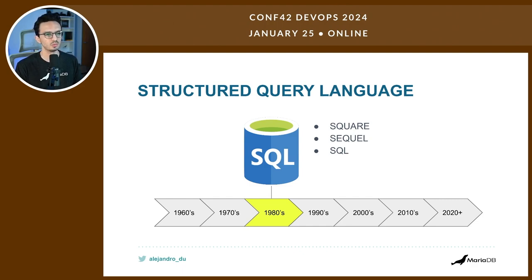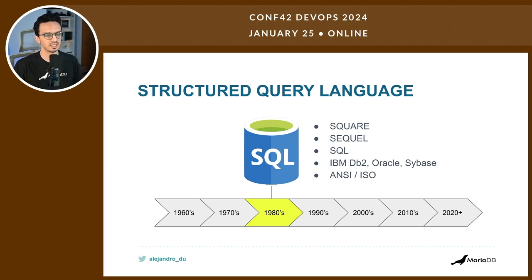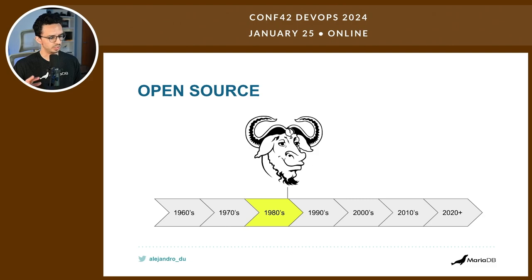However, SEQUEL was a trademark held by some aircraft-related company in the UK, so they removed the vowels and SQL was born. Even though it's spelled SQL, many still pronounce it 'sequel.' It doesn't really matter — it's here today and nobody has come up with a better language than SQL. IBM DB2, Oracle, and Sybase adopted SQL, and it became an ANSI and ISO standard around 1986 or 1987.